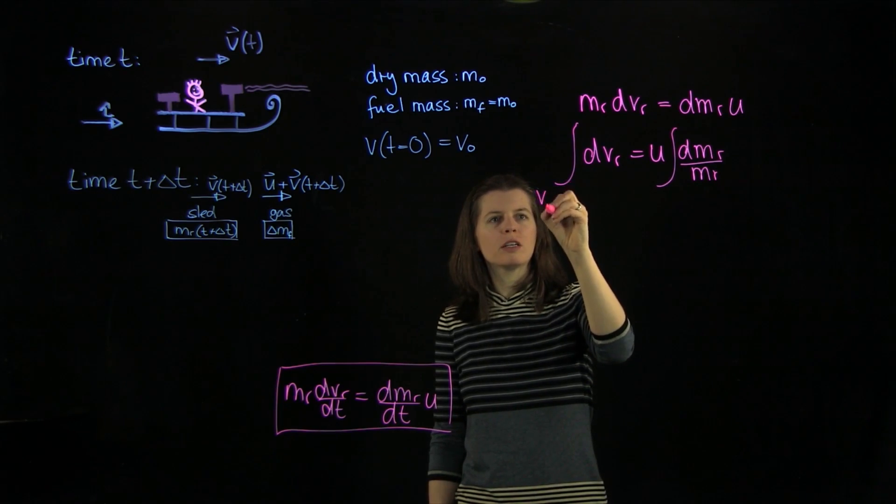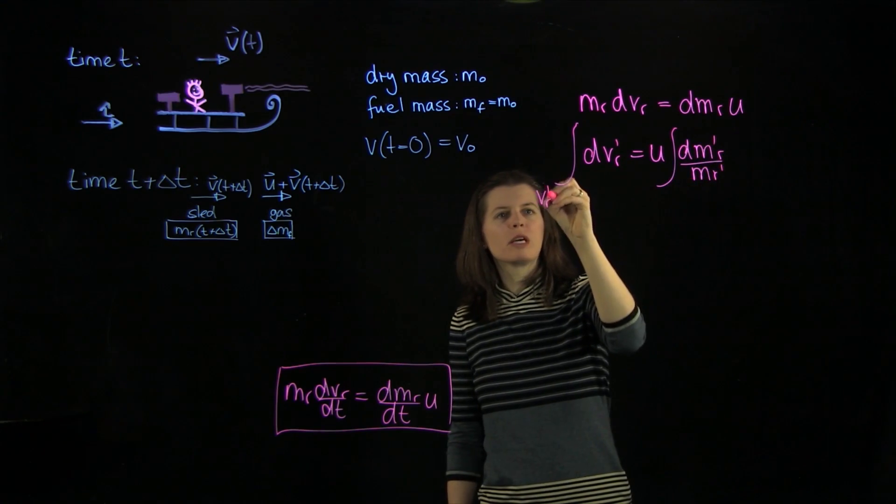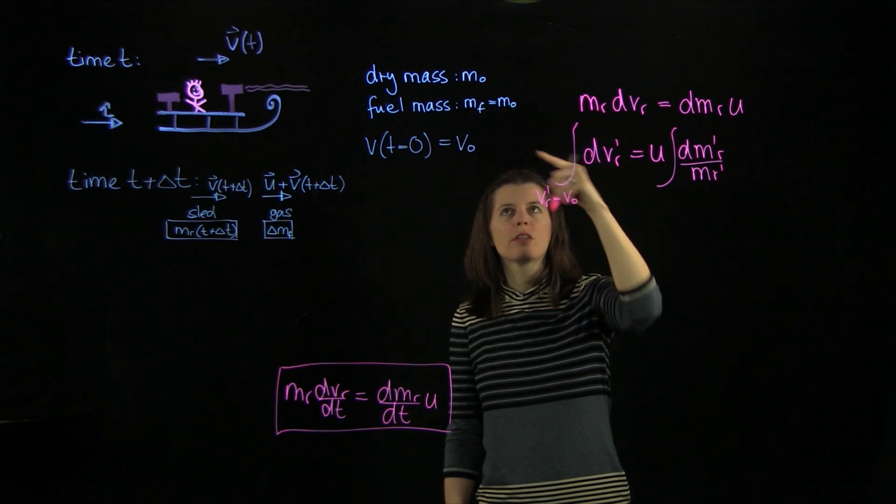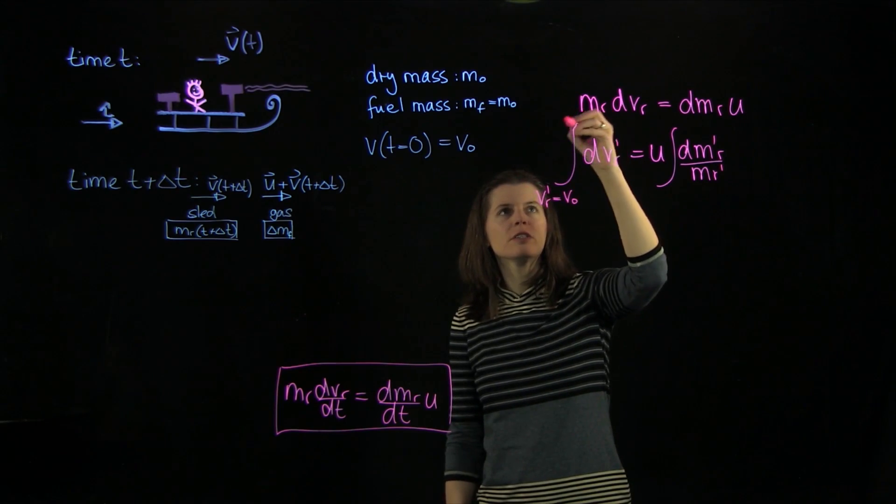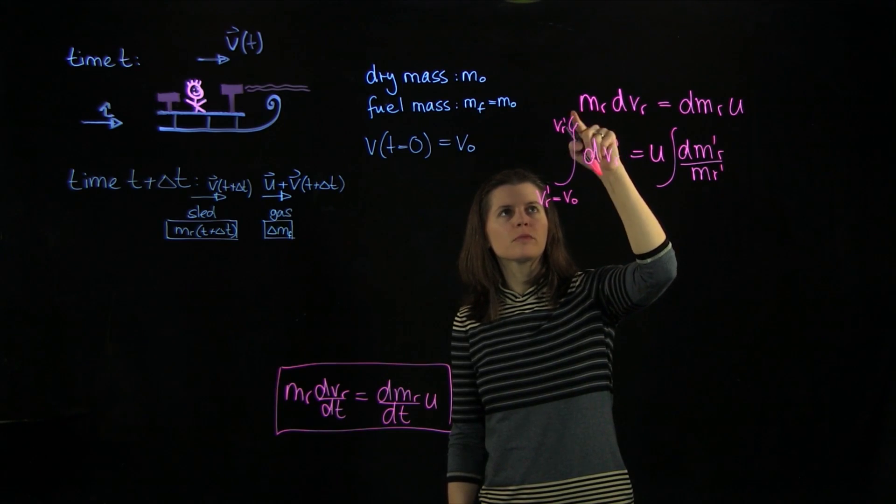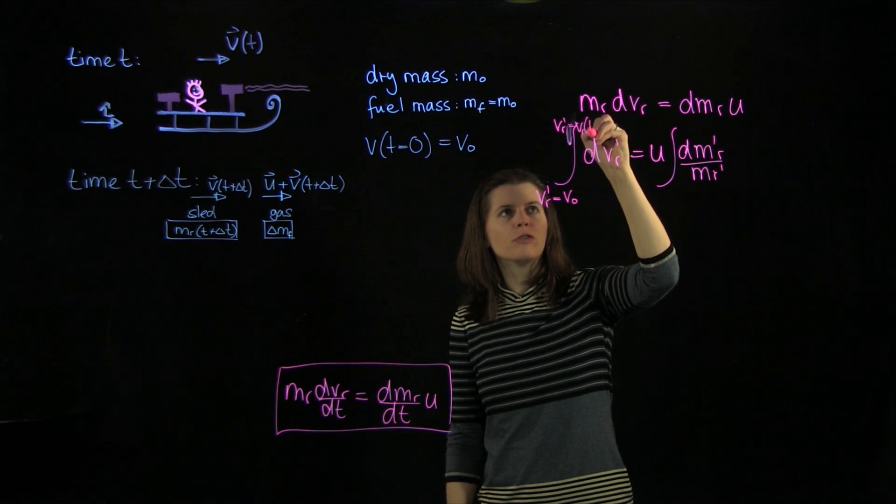We have vr, and actually these now are all primes. So we have vr going from v0, that is our initial condition here, to vr prime equals vr of t.